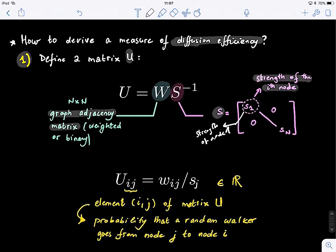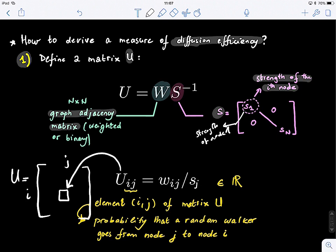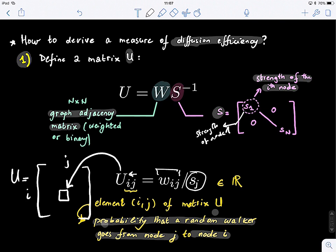Each element U_IJ of matrix U denotes the probability that a random walker goes from node J to node I. We read it as going from node J to node I — this is what we defined earlier when looking at search information. It's taking the weight W_IJ and normalizing it by the strength of the node from where the walk is starting. So going from J to I, you take W_IJ and divide by the strength of node J.